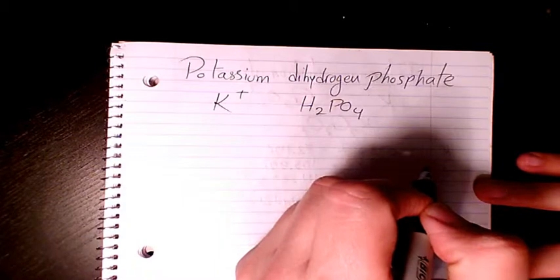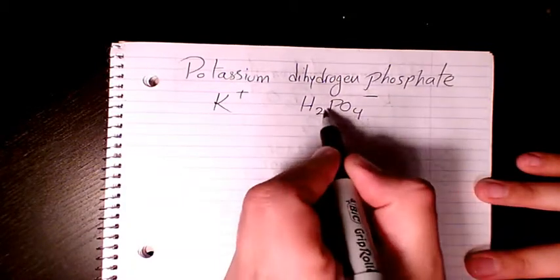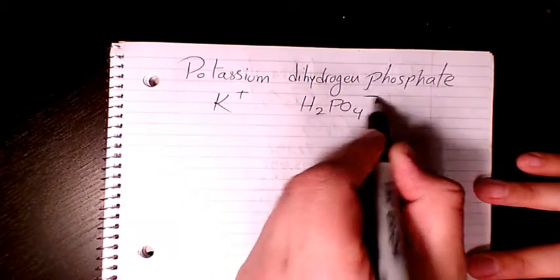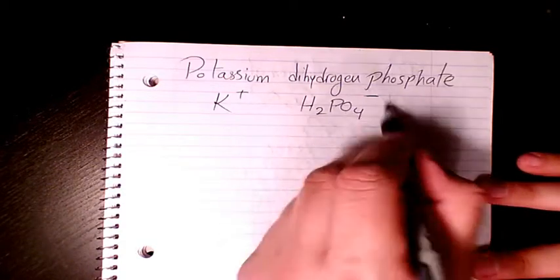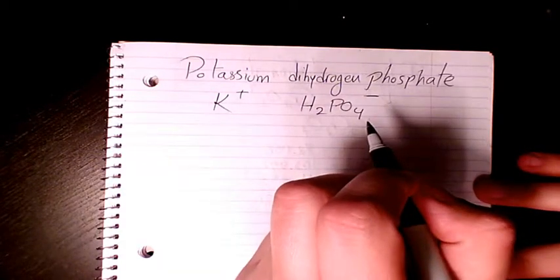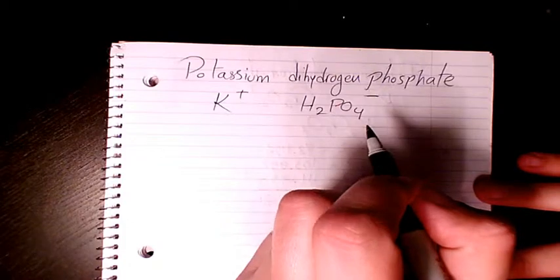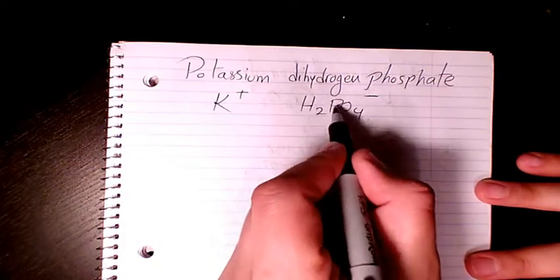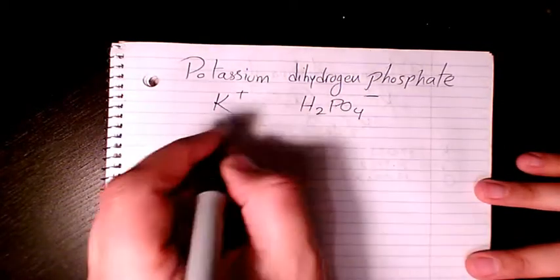And the charge here is negative 1, H2PO4-. It's like phosphoric acid that lost the hydrogen, the proton, so it's gonna be H2PO4-. So then when we combine them it's gonna be KH2PO4, that's the compound.